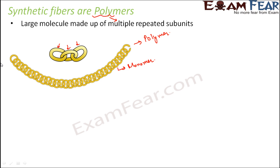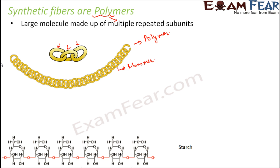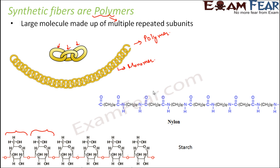Let's take some examples of polymers. Starch is an example of a polymer. If you look at the chemical structure of starch, you can see one unit repeating over and again — the same unit repeats to form the large molecule of starch.